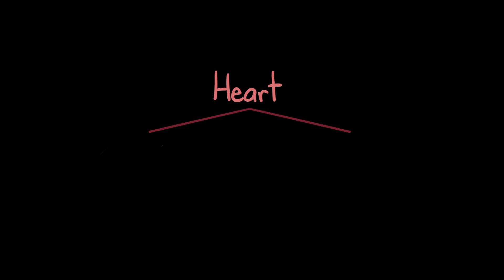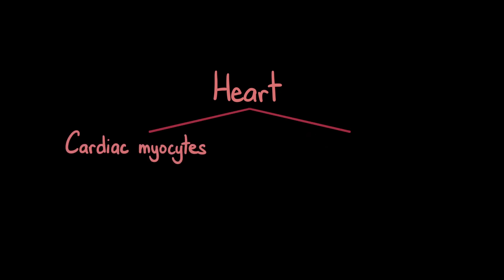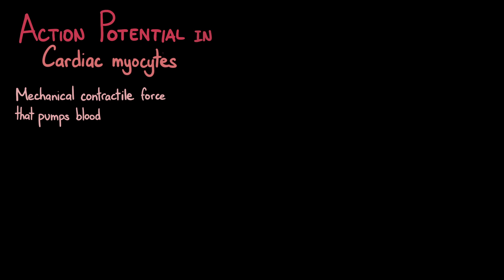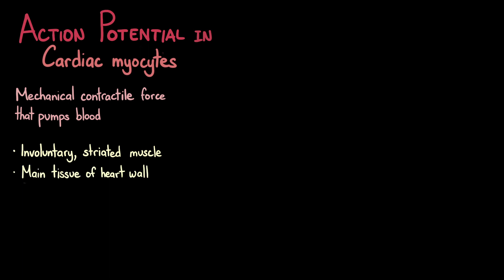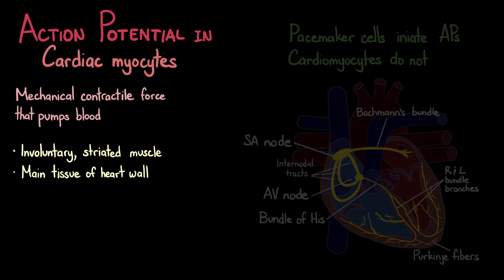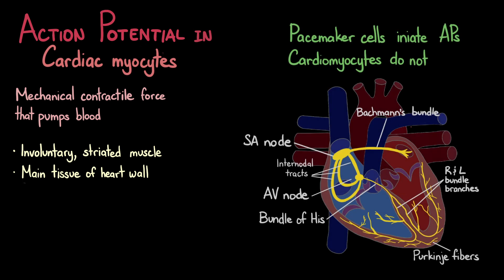The heart is composed of two different types of cells: cardiac myocytes and pacemaker cells. In this video we will explore how an action potential is started in cardiac myocytes, also called cardiomyocytes or cardiac muscle cells. The cardiomyocytes are responsible for the mechanical contractile force that pumps the blood through the body. They are an involuntary striated muscle that constitutes the main tissue of the wall of the heart.